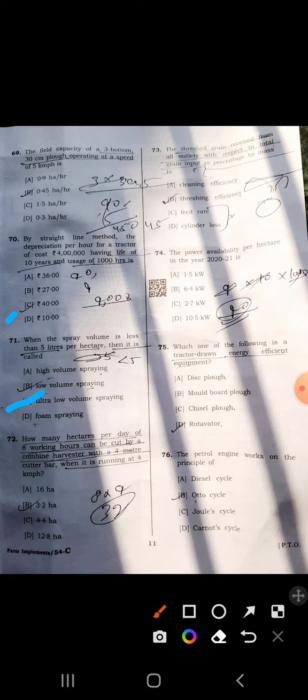Seventy-second: how many hectare per day of 8 hours working can be cut by a combine harvester with 4-meter cutter bar when it is running at 4 kilometer per hour? B is correct, 3.2 hectare.